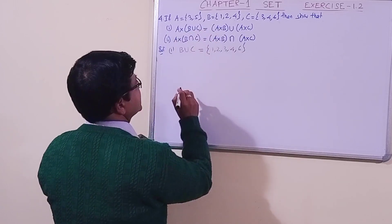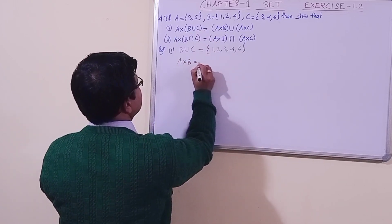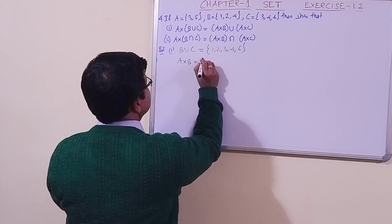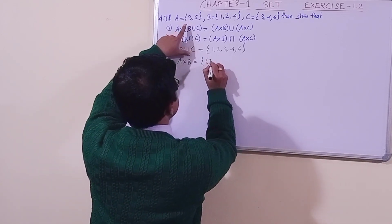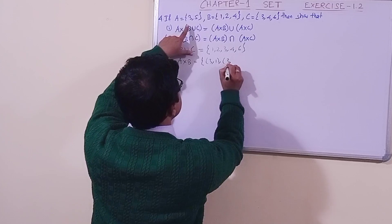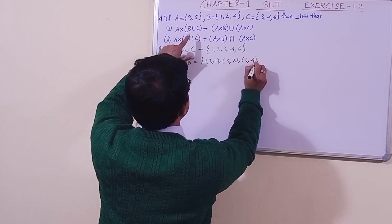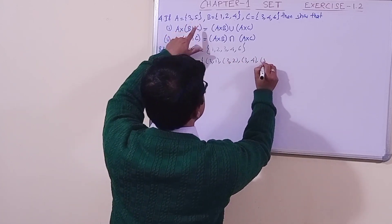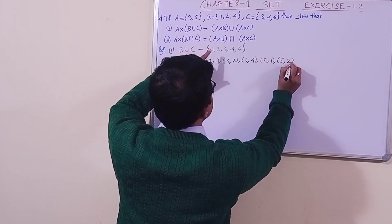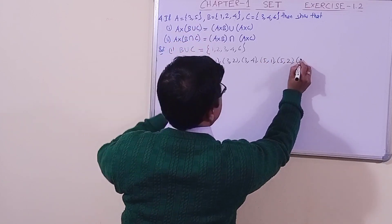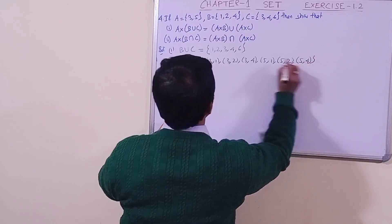Now let us find A cross B. A cross B gives us the ordered pairs: (3,1), (3,2), (3,4), (5,1), (5,2), (5,4). This is found.